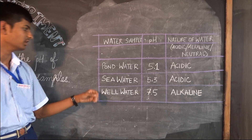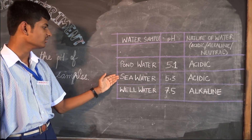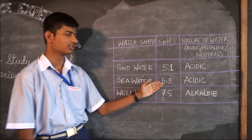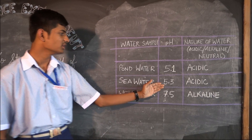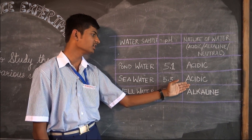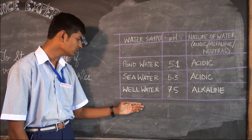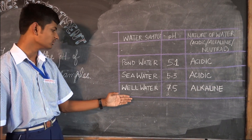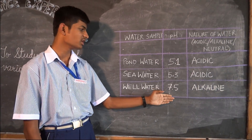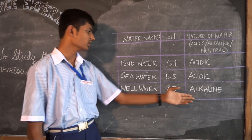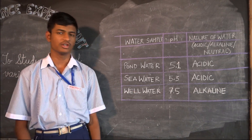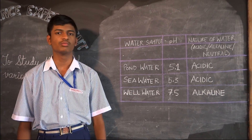7 is the neutral value. Then second we will take sea water — the pH value of sea water is 5.3, and it is acidic since it is less than 7. Third, we will take well water with a pH value of 7.5. It is alkaline because its pH value is more than 7.